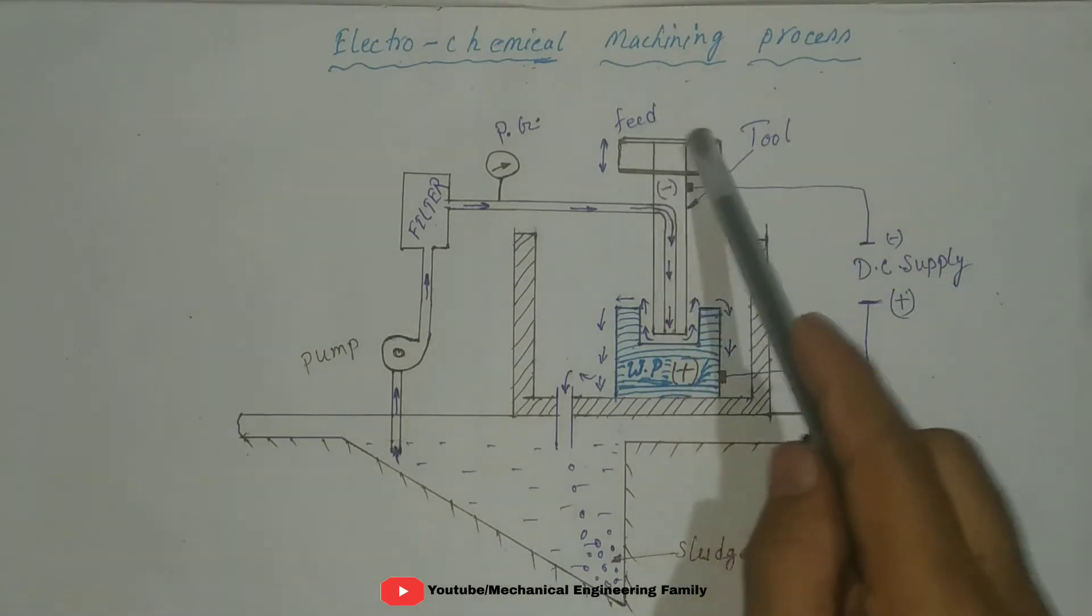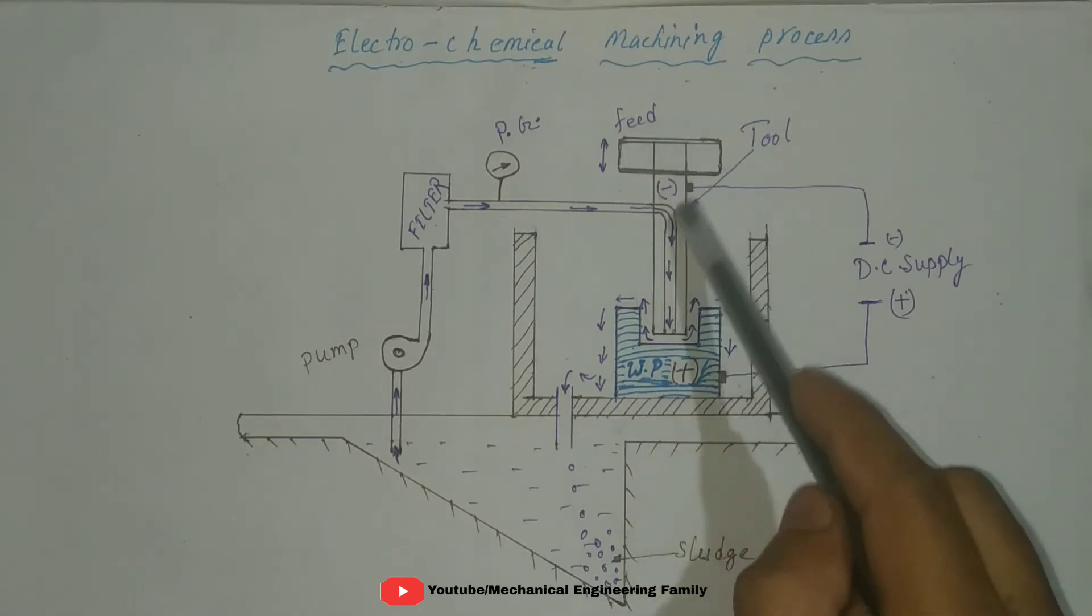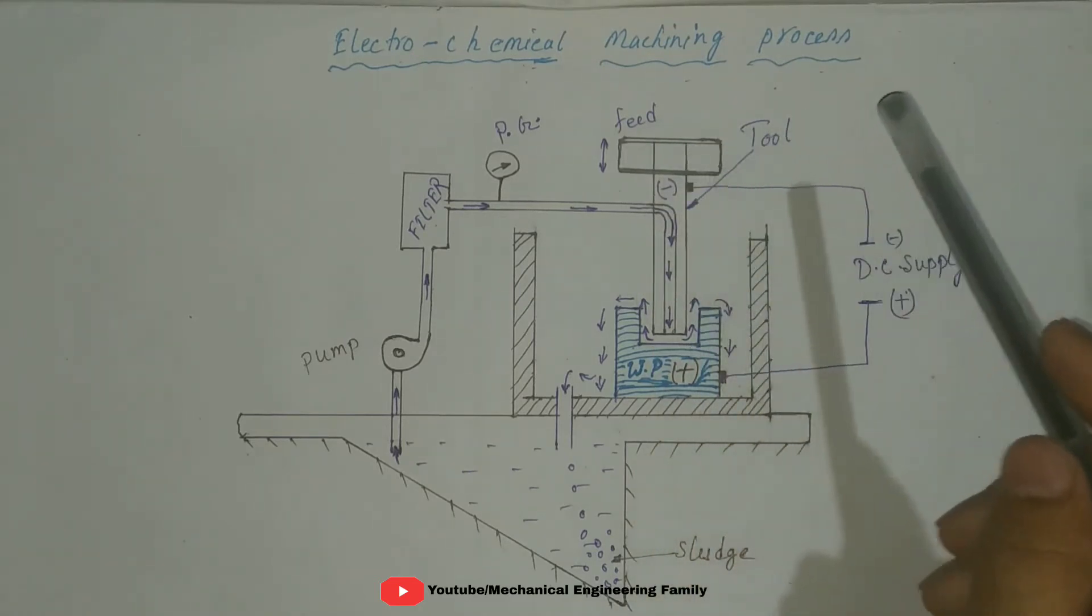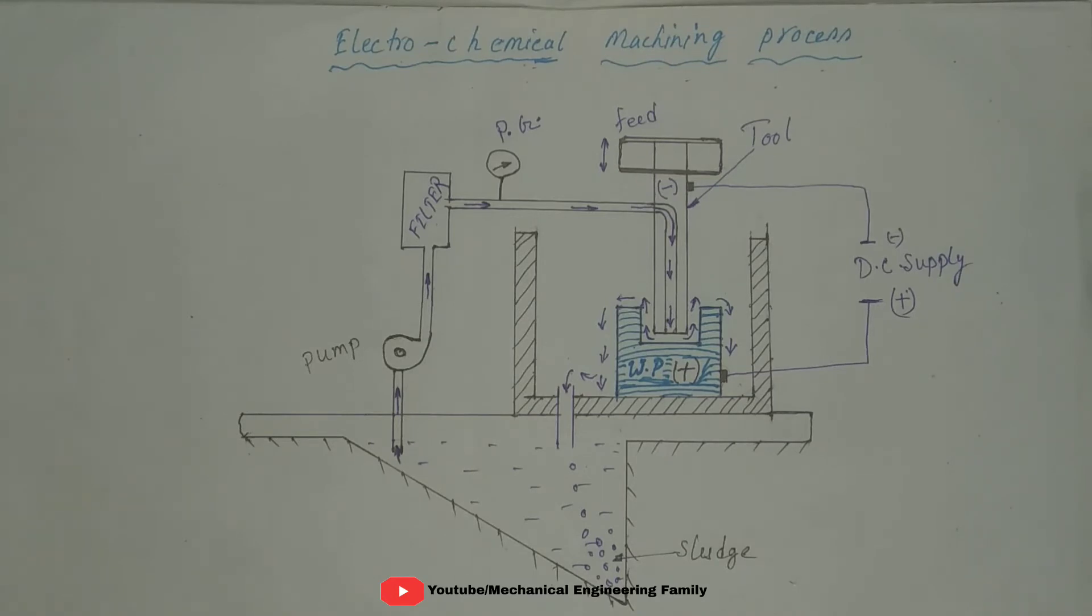This is feed unit, it gives the constant feed. The tool materials should have enough thermal and electrical conductivity, high chemical resistance to electrolyte and machinability.